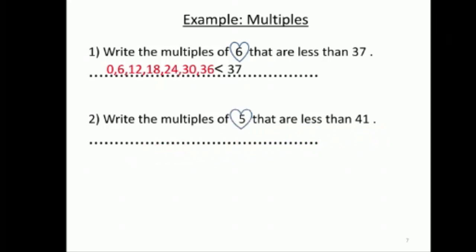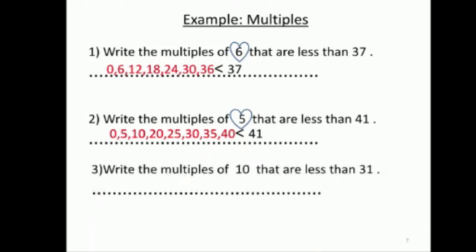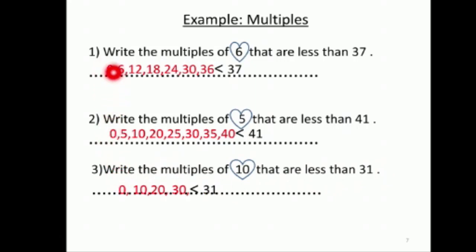هلأ هون بتجيب للـ five، less than — يعني أنا بدي أعد لحتى أضل تحت، يعني من بعد عندي forty-five ما بدي هي. فأنا بدي لحد الـ forty عشان يكونوا less than forty-one. Multiples of ten less than thirty-one: معناه هون عندي zero, ten, twenty, thirty — هني اللي بدي يكونوا less than thirty-one.